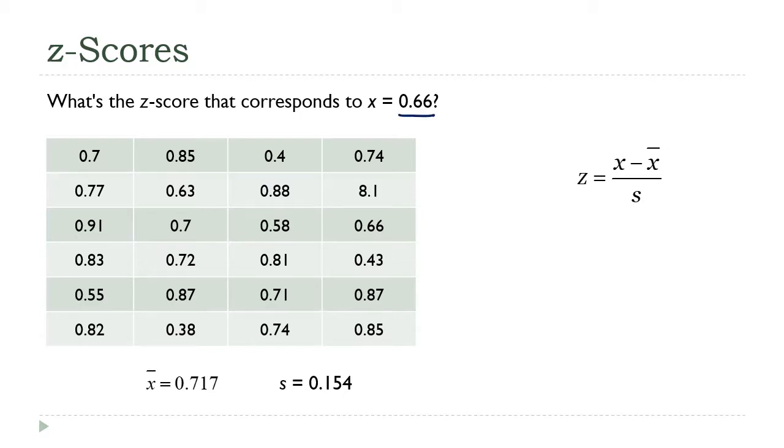That's my x value, and I've got x bar, and I've got s. So all I'm going to do here is drop these numbers into the formula. This becomes 0.66 minus 0.717 divided by 0.154. And you go to your calculator, you get that this is negative 0.370.